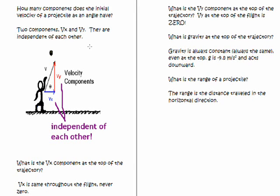What is the gravity at the top of the trajectory? Gravity is always negative 9.8 meters per second. It's never zero. That's a misconception up here at the top of the projectile. You might think it's zero but it's always negative and on Earth it's always around negative 9.8 meters per second squared.